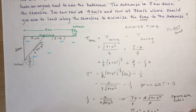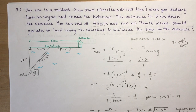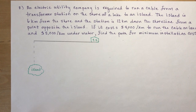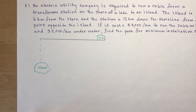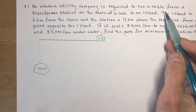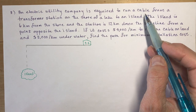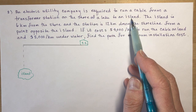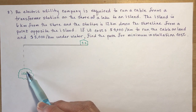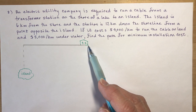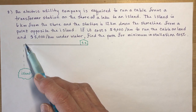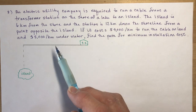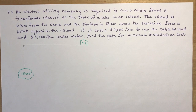Make sure you read the question to figure out what you're trying to minimize. The last question: an electric utility company must run a cable from a transformer station on the shore of a lake to an island. The island is 6 kilometers from the shore and the station is 12 kilometers down the shoreline from the point opposite the island. The cable costs $4,000 per kilometer on land and $5,000 per kilometer underwater. Find the path for minimum installation cost.